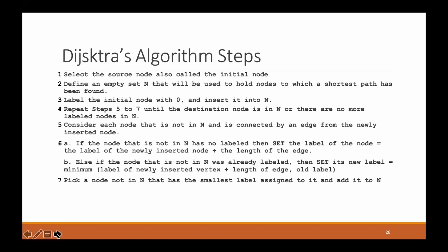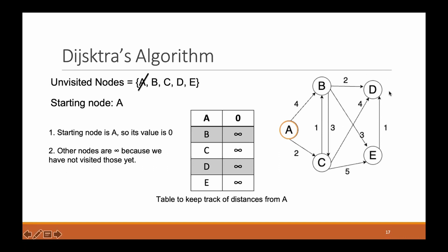Now let's look at the simulation that will make this clearer. We have a graph on the right and we're going to visit all nodes and find the shortest path to each from our starting node A. I have a list of all unvisited nodes — I've crossed out A because it's our starting node and the cost to that node is always zero. We also have a table to keep track of the distances from A. At the beginning we haven't visited any nodes, so the distance from A to all other nodes is infinity.